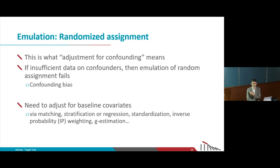There are many methods to adjust for confounding, but the method is typically not the most important thing. When we have a non-time-varying treatment, the method used to adjust for confounding is more a matter of personal taste. If we have enough data, we will be able to adjust correctly for confounders, as long as we have the confounders in the data — that is the most important part.